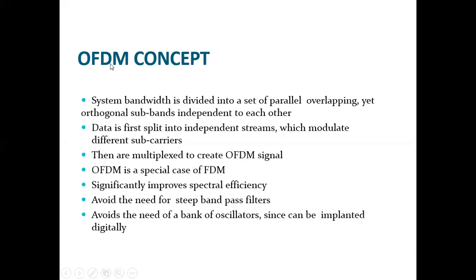Coming to the concept of the OFDM system: in an OFDM system, the system bandwidth is divided into a set of parallel overlapping yet orthogonal sub-bands which are independent of each other. The data is first split into independent streams which are then modulated on different sub-carriers, and then multiplexed to create an OFDM signal. OFDM is a special case of FDM that significantly improves spectral efficiency, avoids the need for band-pass filters, and a bank of oscillators can be replaced digitally.